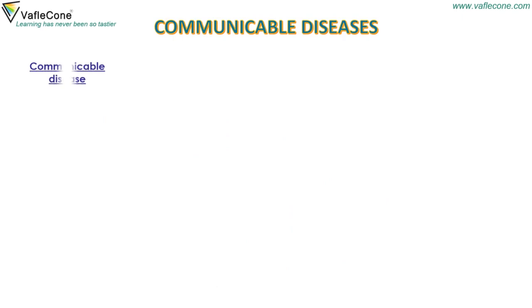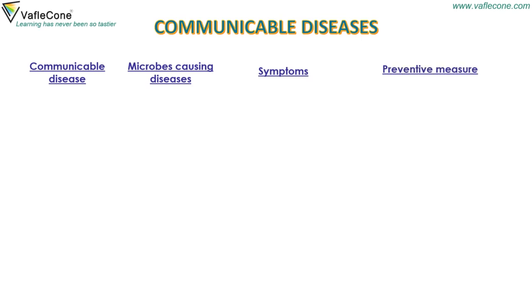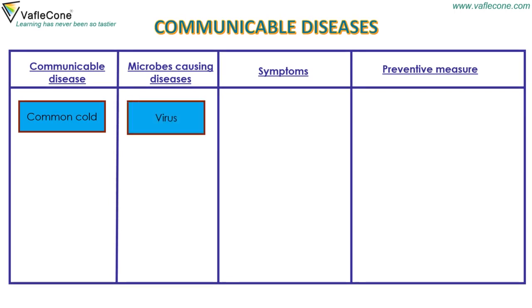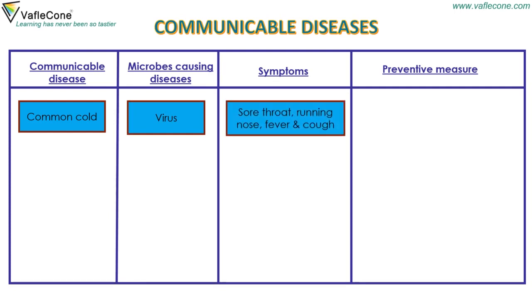Now let's see the names of some communicable diseases, the harmful microbes causing the disease, symptoms, and preventive measures. Common cold: microbes causing the disease — virus. Symptoms: sore throat, running nose, fever, and cough. Preventive measures: personal hygiene and stay away from infected people.